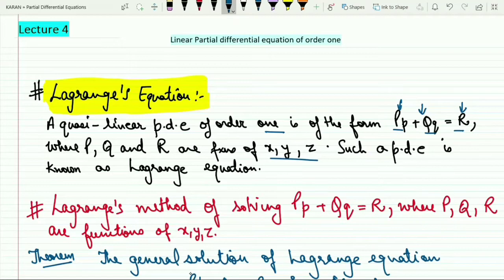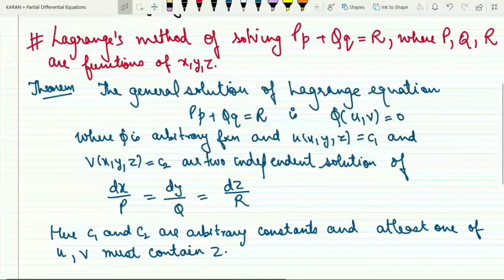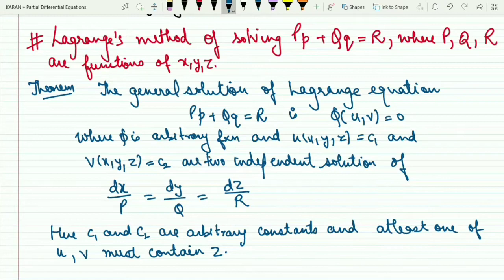Now, is there any method to solve the Lagrange's equation? Yes, there is a method and that can be stated through a theorem. We are going to discuss the Lagrange's method of solving the equation which is of the form pp plus qq equals to R, where P, Q and R are the functions of x, y and z.